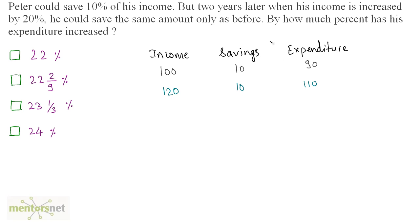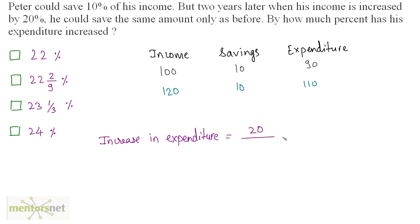It has been asked by how much percent has his expenditure increased. The expenditure increased by 20, from 90 to 110. So the percentage increase in expenditure is 20 upon 90 times 100, which equals 200 divided by 9.